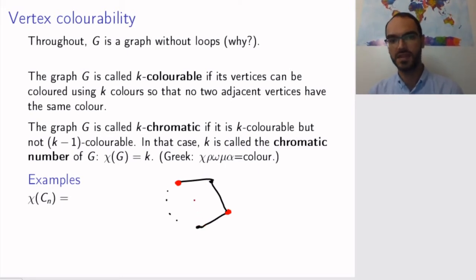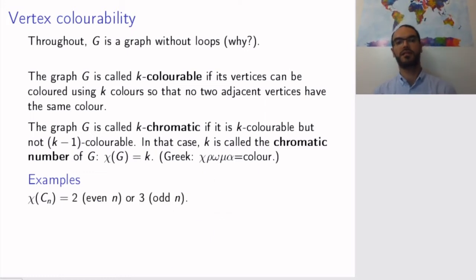If the number is even, I can color every other vertex red, every other vertex black, and be fine with that. In other words, I will only need two colors. But if the number of vertices is odd, then this last vertex will have to have some other color. And therefore, we get the result that the chromatic number is 2 for even n and 3 for odd n.